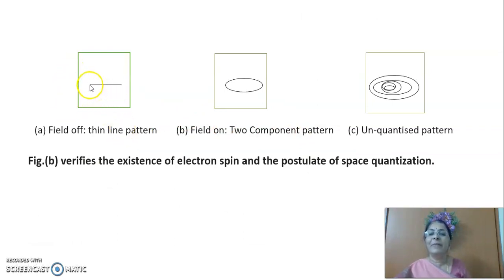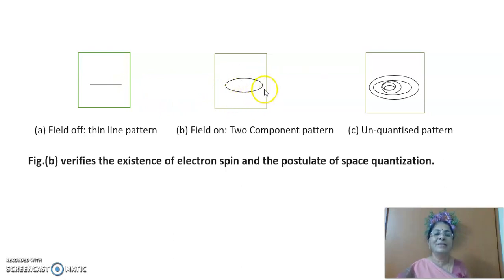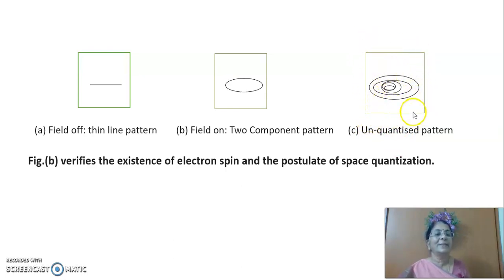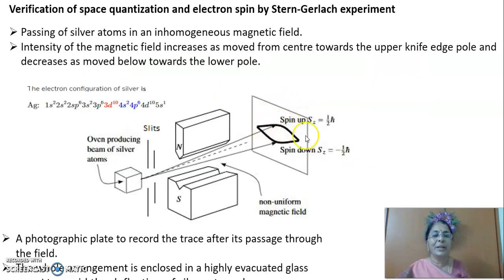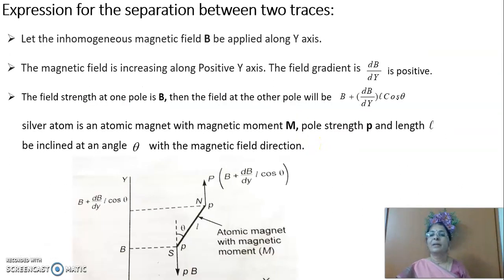If there is no magnetic field, the photographic film will just trace a single thin line. In the presence of the magnetic field, we have an upper curve and a lower curve. Classically, scientists believed that if electrons orient in all directions, the photographic film would have traces depicting deflection in various directions. But the experiment showed only two curves.